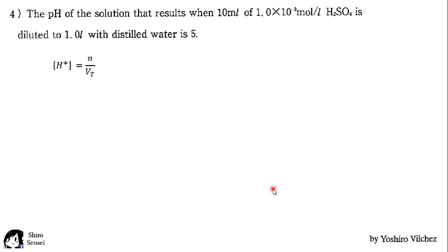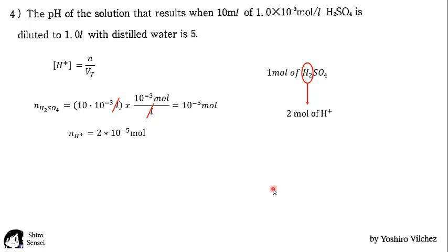We have to calculate with the same steps. But calculating the number of moles of hydrogens, we need to keep in mind that 1 mole of sulfuric acid gives us 2 mole of hydrogens. So we need to multiply by 2. The number of moles of hydrogens is 2 times 10 to the minus 5 mole. And the total volume doesn't vary, so this is 1 liter. We have the two values, and finally we get the concentration of hydrogens is 2 times 10 to the minus 5 mole per liter.